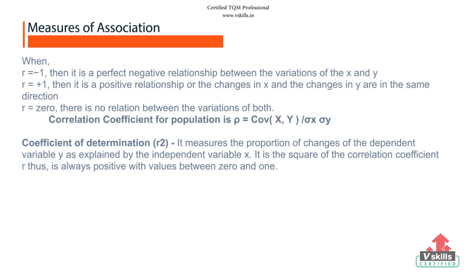Correlation coefficient: a number between plus one and minus one calculated so as to represent the linear interdependence of two variables or sets of data.